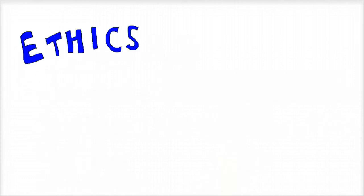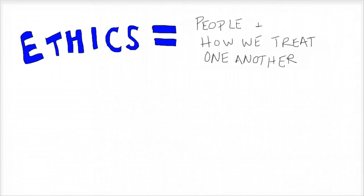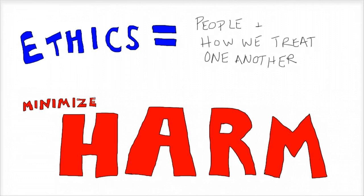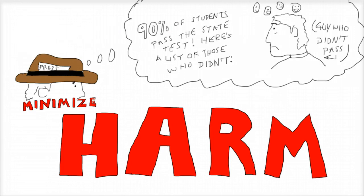At the end of the day, ethics is about people and how we treat one another, so an important ethical idea in journalism is that you should always try to minimize harm. As an ethical journalist, you should think about those who may be affected negatively by your news coverage, and you should try to be as compassionate and humane toward them as possible without compromising the truth. This is especially true when dealing with children, minors, and inexperienced sources or subjects.